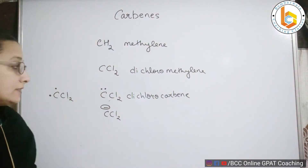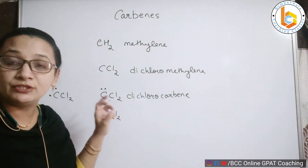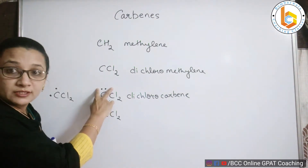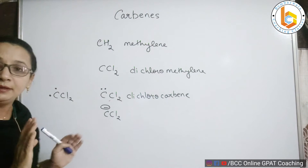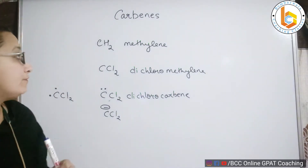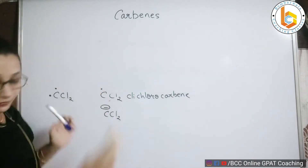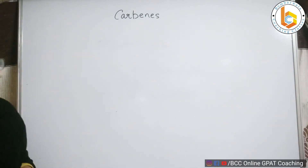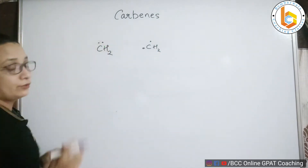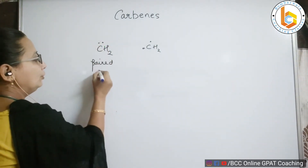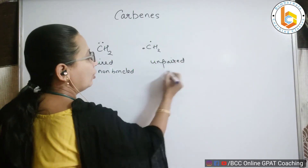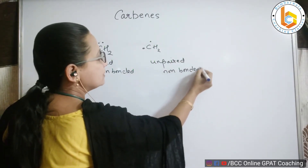So what is the definition of carbene? It is a carbon which contains two non-bonded electrons. Those two non-bonded electrons can be paired, or they can be unpaired — they can exist in one system but not occur as a pair. We can represent it as CH₂ or CCl₂ with either paired or unpaired non-bonded electrons. This is the definition of carbenes.